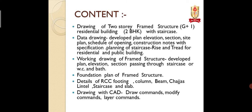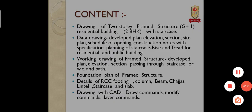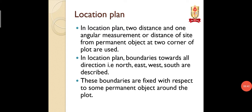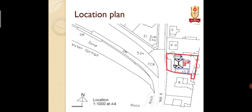Now we are going to see the foundation plan, schedule of opening, construction notes, and more. In the location plan, two distances and one angular measurement, or a distance of the site from a permanent object at two corners of the plot, are used. The boundary towards all directions — north, south, west, east — are described, and their boundaries are fixed with respect to some permanent object around the plot.